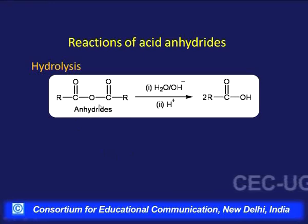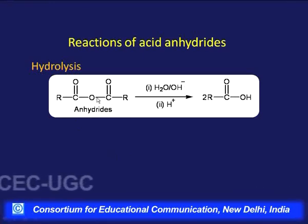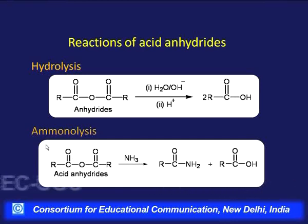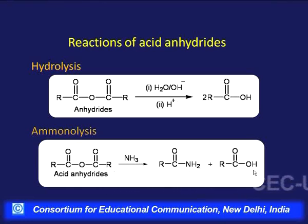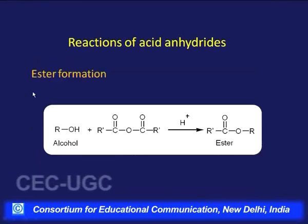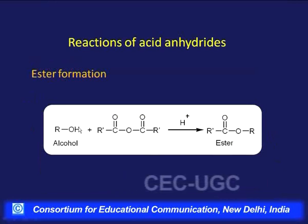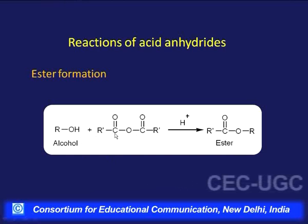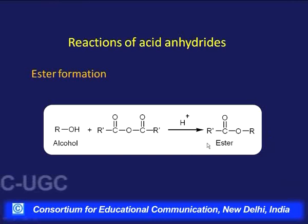Acid anhydrides are very reactive and can be hydrolyzed even with simple water; a small amount of alkali makes the reaction very fast, giving carboxylic acids. They react with ammonia (ammonolysis), where ammonia acts as a nucleophile attacking one carbonyl group; the other part is displaced as an acid, giving one molecule of amide and one of carboxylic acid. Alcohols and phenols also react with acid anhydrides to give esters.